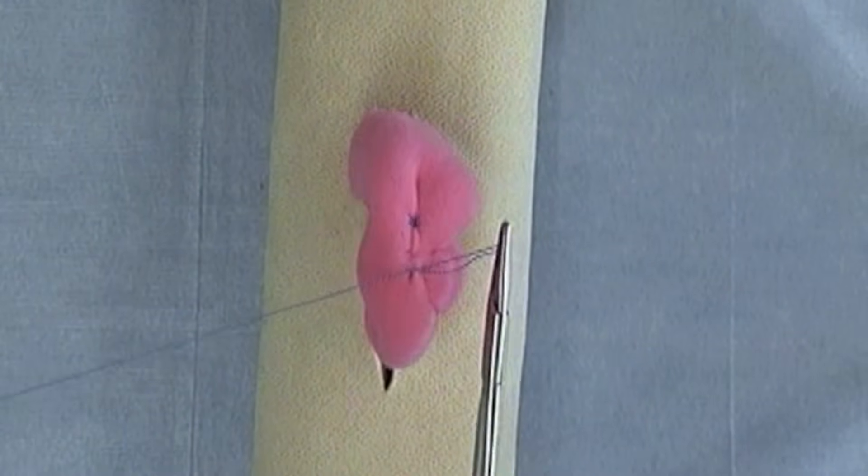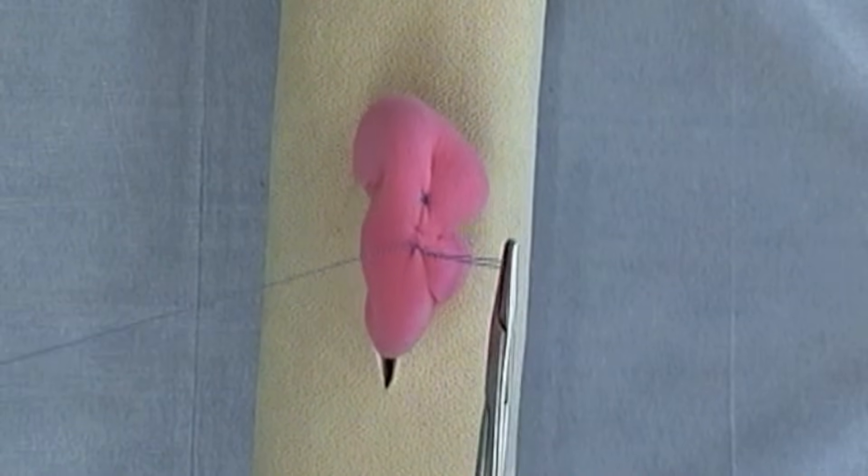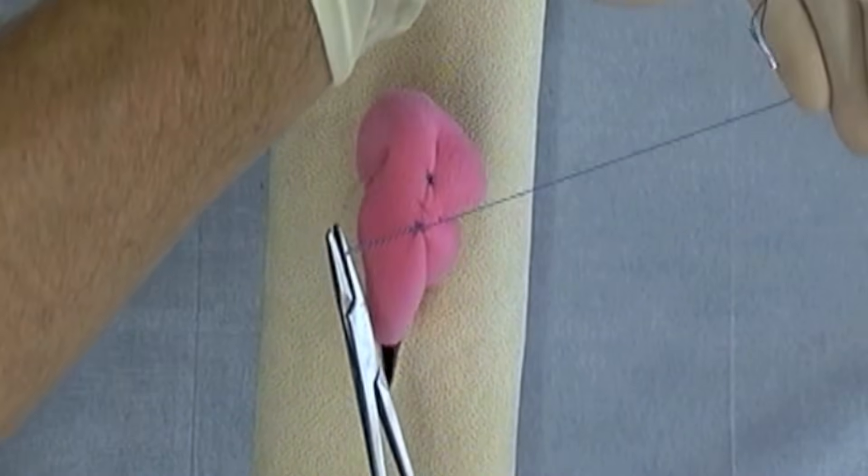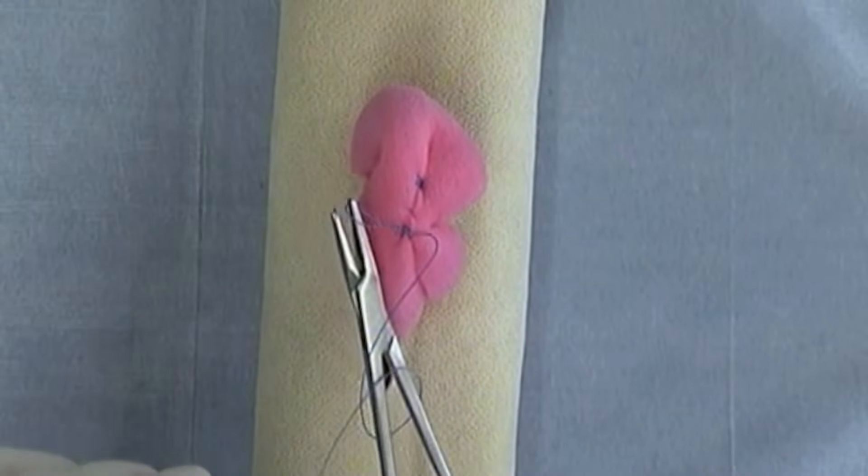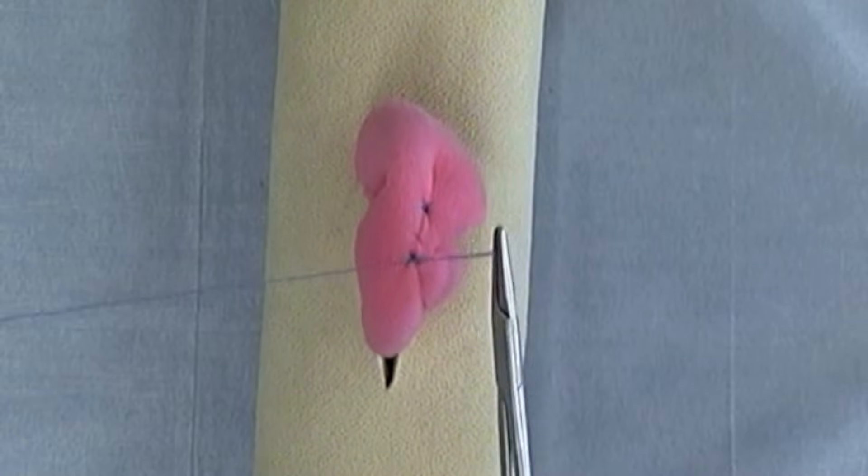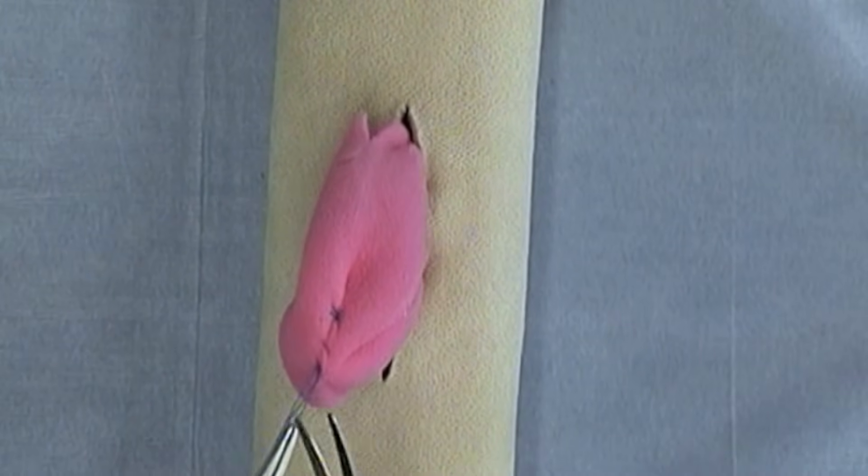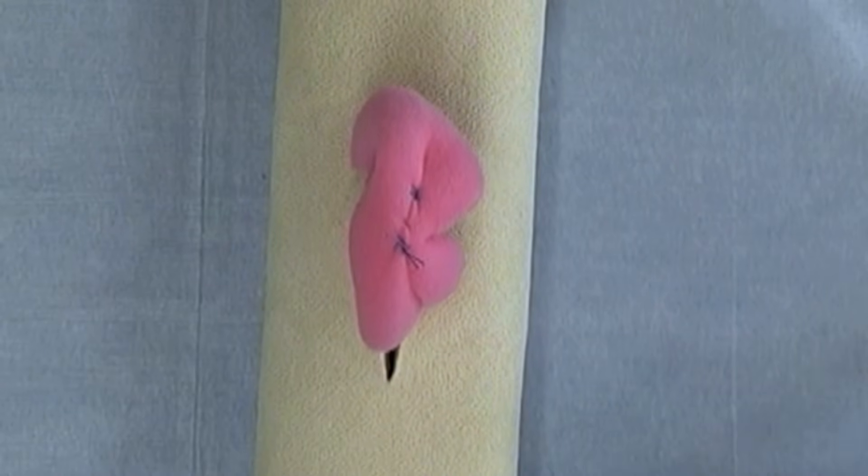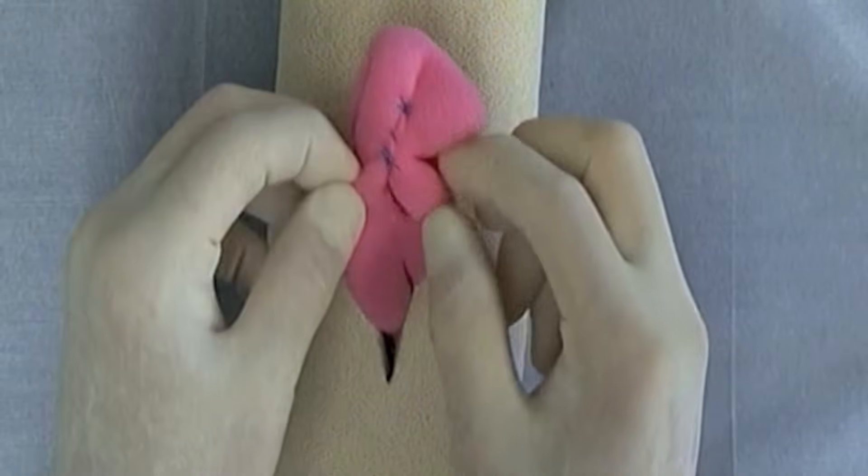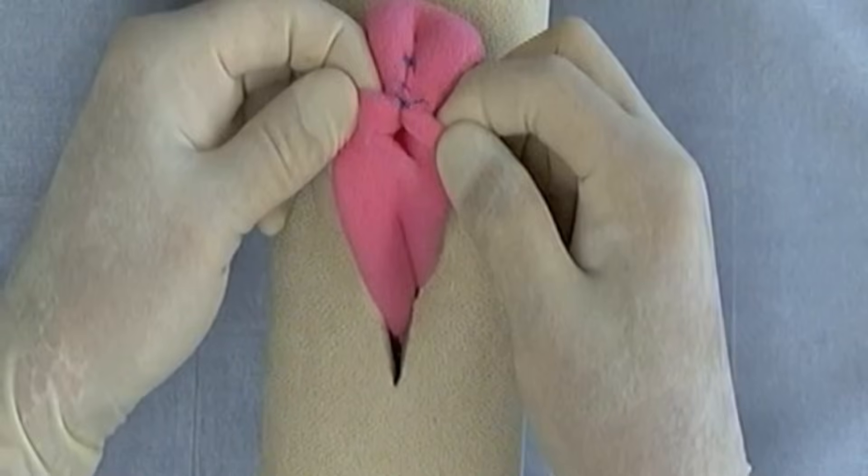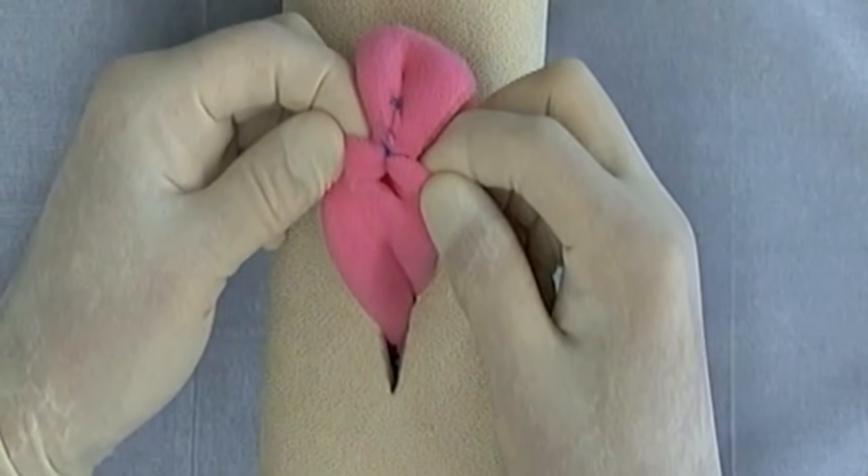So this was a continuous Lembert started by performing a Lembert suture and ending by performing a Lembert suture. And just to demonstrate you can see that this has inverted a substantial amount of the intestinal wall.